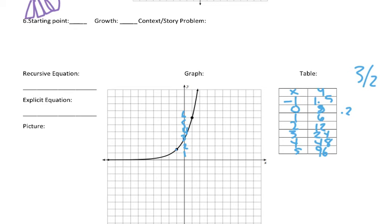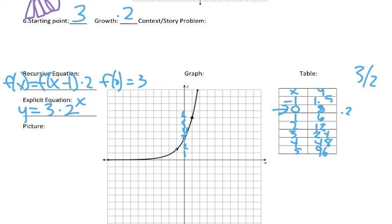So, what could we do? So, we start at three, because that's our zero term. And then, we're times them by two. So, f of x equals f of x minus one times two. f of zero equals three. y equals three times two to the x.